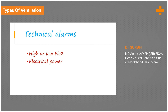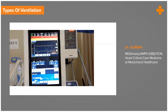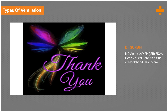Technical alarms, also called input alarms, include high or low FiO2 — a low FiO2 would mean there is no oxygen supply, and a high FiO2 would mean there is no air supply. Electrical power failure alarms are also inbuilt into the machines.